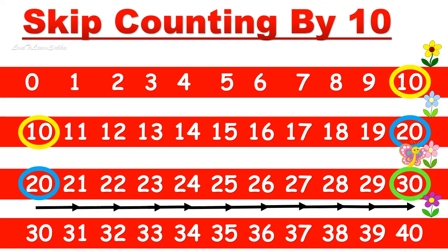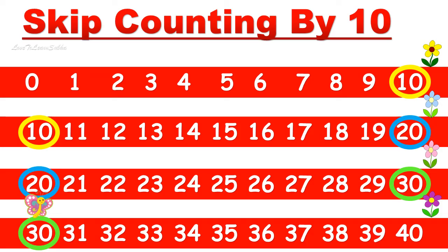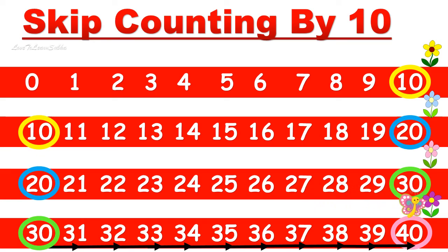From thirty, the butterfly skip counts by ten once more: one, two, three, four, five, six, seven, eight, nine, ten — the number is forty, and the butterfly moves to number forty, reaching the purple flower. The little butterfly has reached all the flowers by skip counting by ten! I hope you have learned about skip counting by ten.